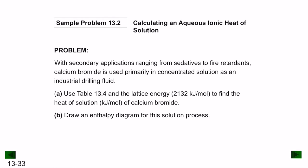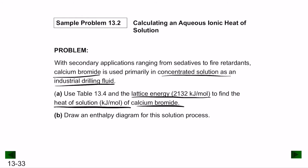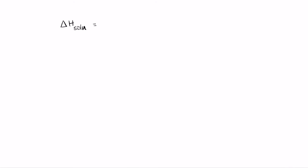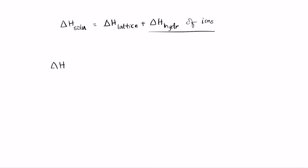Worked problem: Calcium bromide (CaBr₂) has a lattice energy of 2132 kJ/mol. Find the heat of solution. ΔH_solution = ΔH_lattice + ΔH_hydration. CaBr₂ dissociates into Ca²⁺ and 2 Br⁻. ΔH_hydration = ΔH_hydration(Ca²⁺) + 2 × ΔH_hydration(Br⁻).